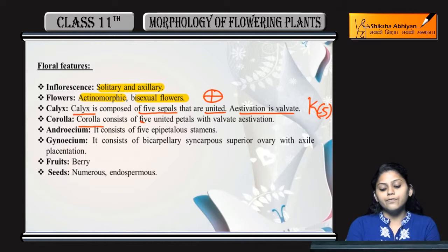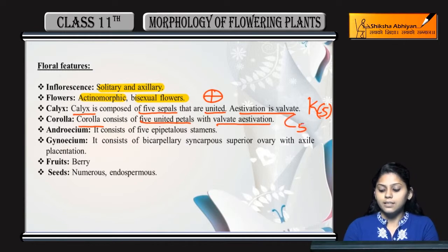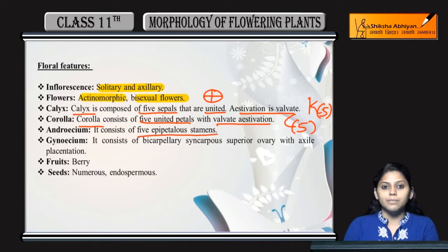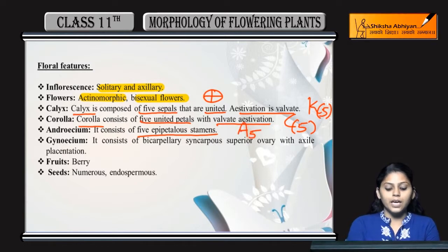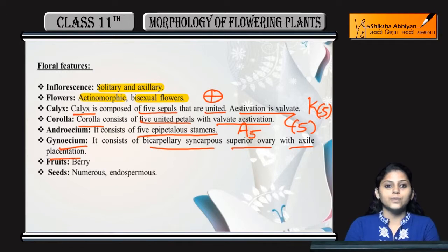Corolla: five united petals, meaning gamopetalous. Estivation is valvate, gamopetalous fused. Androecium: five epipetalous stamens, meaning the stamens are present on the petals. Gynoecium: bicarpellary syncarpous, with superior ovary and axile placentation.